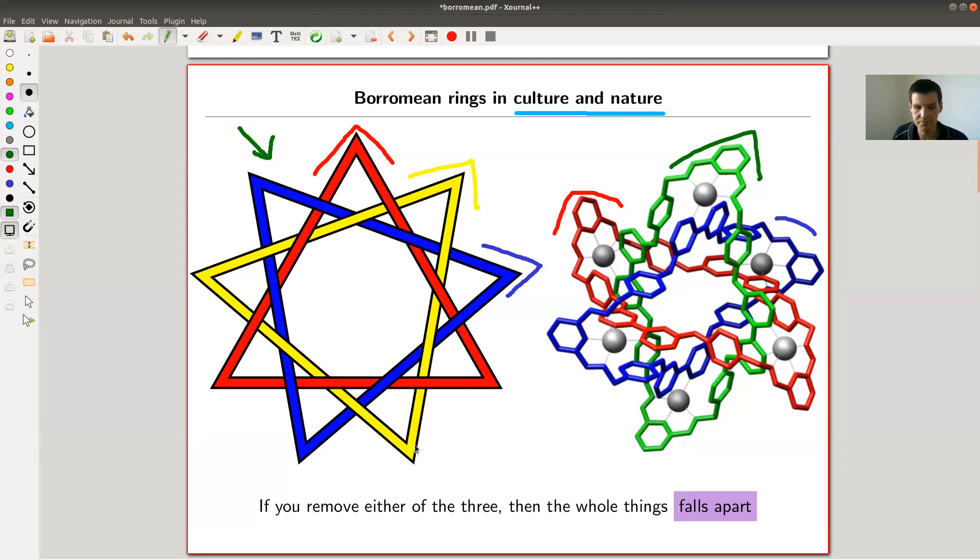This is the picture, and it goes back to some ancient symbols. It's very well known in arts and culture. Surprisingly, also in nature, apparently there are molecules, that's this thing on the right. There are certainly molecules that are knotted, that's been well known for a long time. And how the molecules are knotted plays a crucial role for their chemical behavior. I was a bit surprised when I learned that actually Borromean molecules exist.